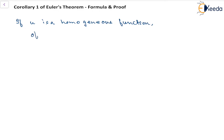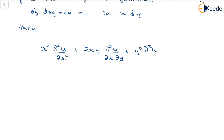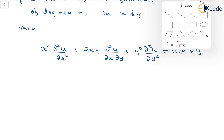So, let's say we have a homogeneous function u of degree n in variables x and y. Then, x squared times the second derivative of u with respect to x, plus 2xy times the second derivative of u with respect to x and y, plus y squared times the second derivative of u with respect to y, can be given as n times (n minus 1) times u. This is Corollary 1.